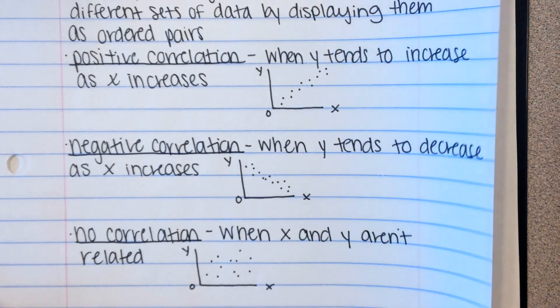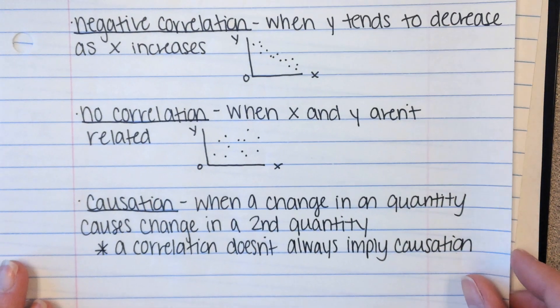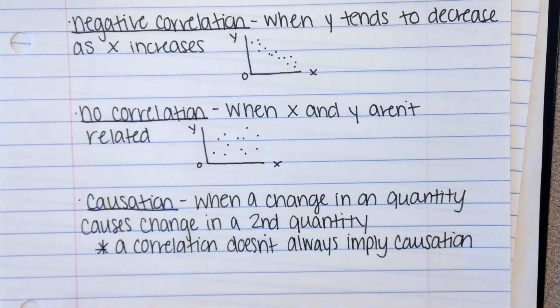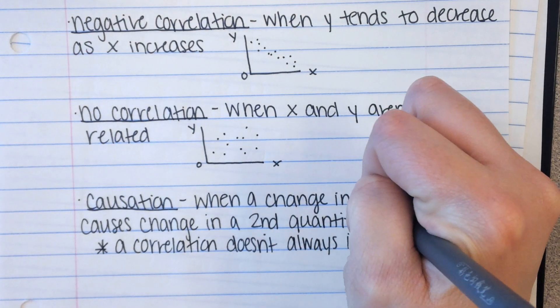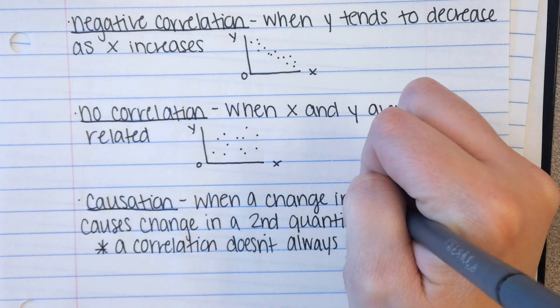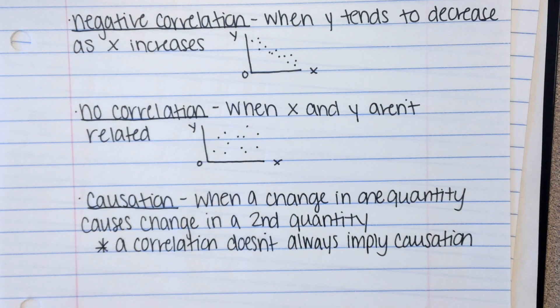Now, when we're talking about correlations, it's important to think about causation. Causation is when a change in one quantity causes change in a second quantity. So that's the X changes and it causes Y to change. Now, a correlation does not always imply causation.